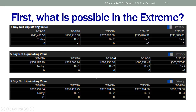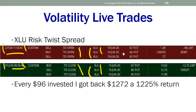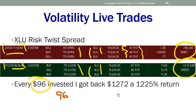I wanted you to see what's possible in the extreme. The types of trades that got me there were predominantly option trades — specifically risk twist spreads. Let me show you a trade execution: here's the exact time and date, an opening trade, a closing trade, the product, the exact options traded, and the debit and credit. In this XLU risk twist spread, every $96 I invested I got back $1,272. You could scale it — $960 to produce $12,720.